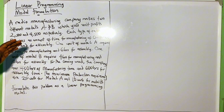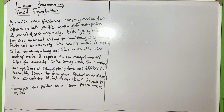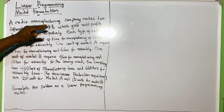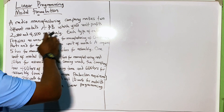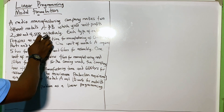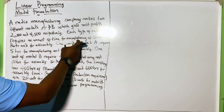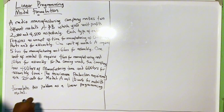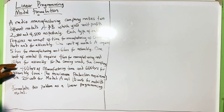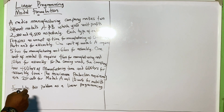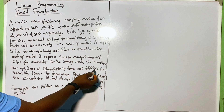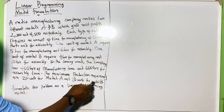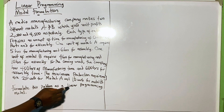So we are going to see how to build a model from a raw question. A manufacturer makes two different models of a product, A and B, which yield unit profits of 2,500 and 4,500 Naira respectively. Each model requires manufacturing and assembly time. Model A requires 5 hours of manufacturing and 6 hours for assembly. Model B requires 4 hours for manufacturing and 10 hours for assembly. For the coming week, the company has 400 hours of manufacturing time and 600 hours for assembly time. The minimum production requirements are 20 units of model A and 10 units of model B. The requirement is to formulate the problem as a linear programming model.